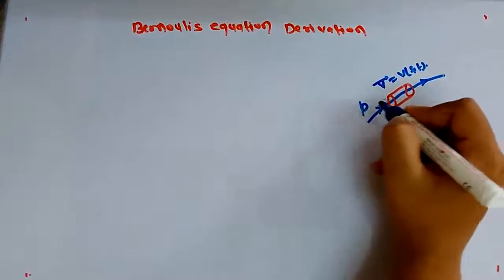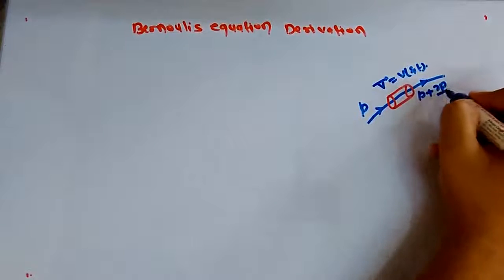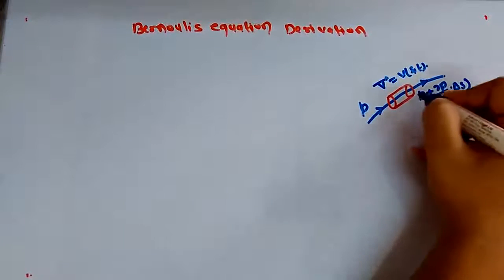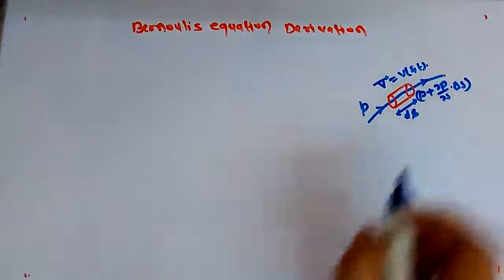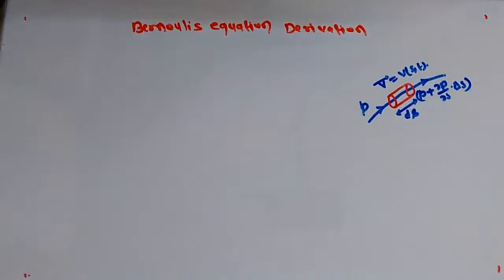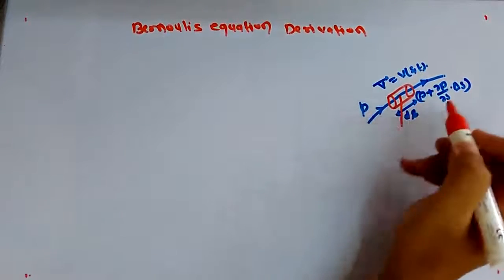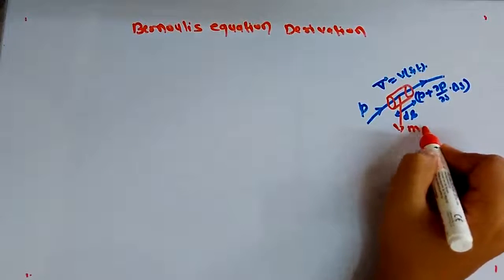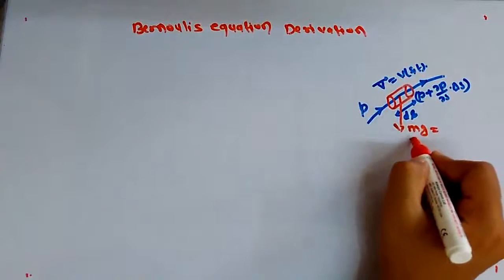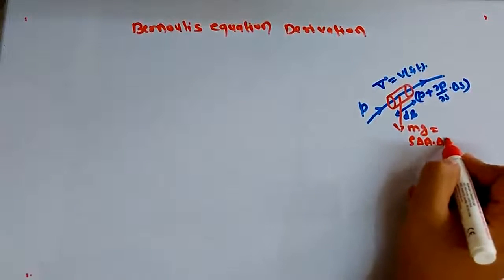The pressure acting upstream is p, and the pressure acting along the downstream is p plus (del p / del s) times delta s. The length of this fluid element is ds. There are two types of forces acting here: one is the pressure force along the streamline, and another is the body force acting downward due to weight, which is mg = rho * delta_a * delta_s * g.